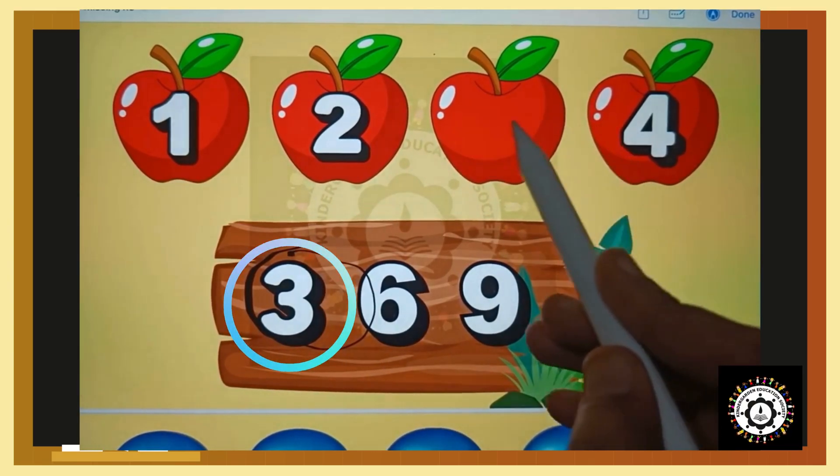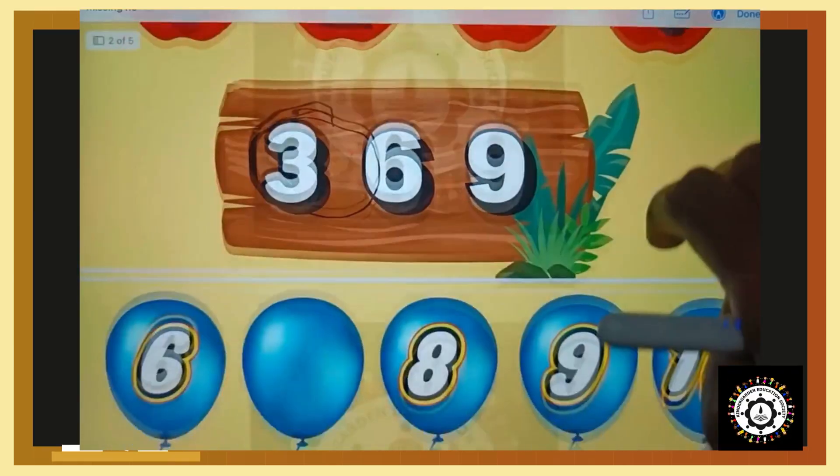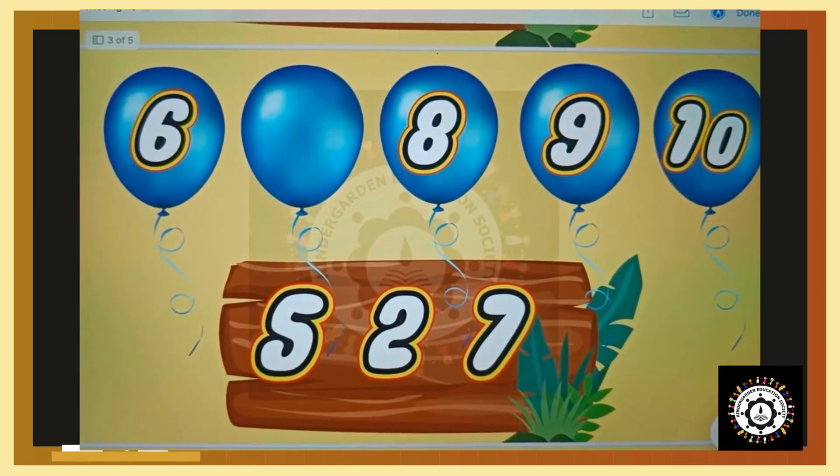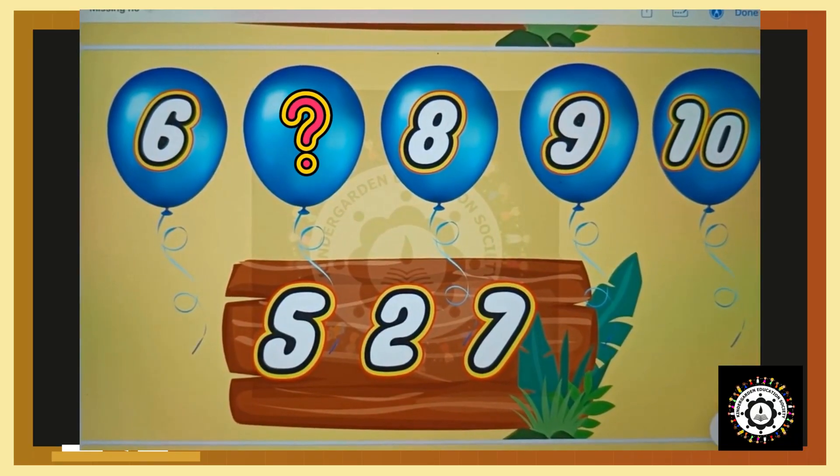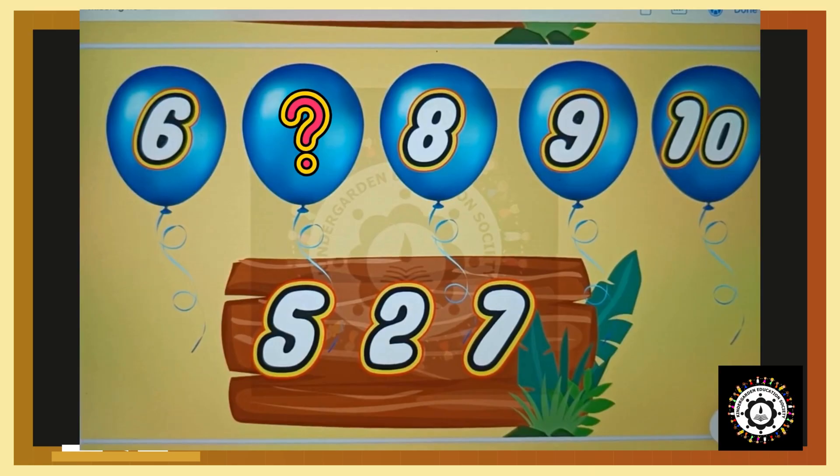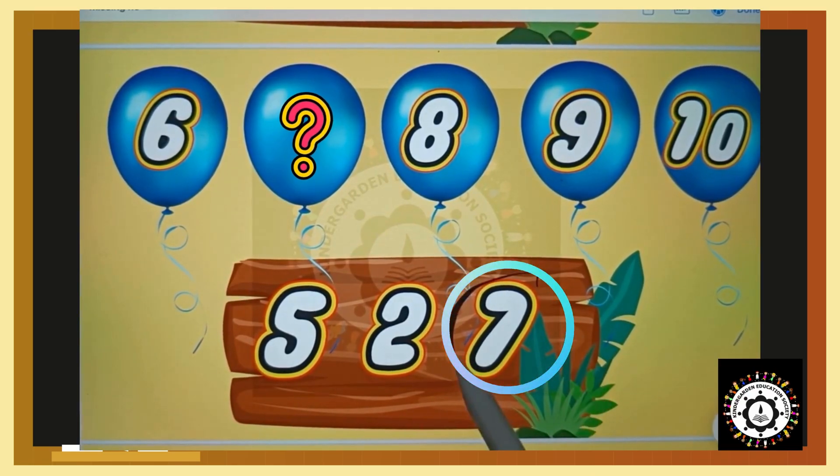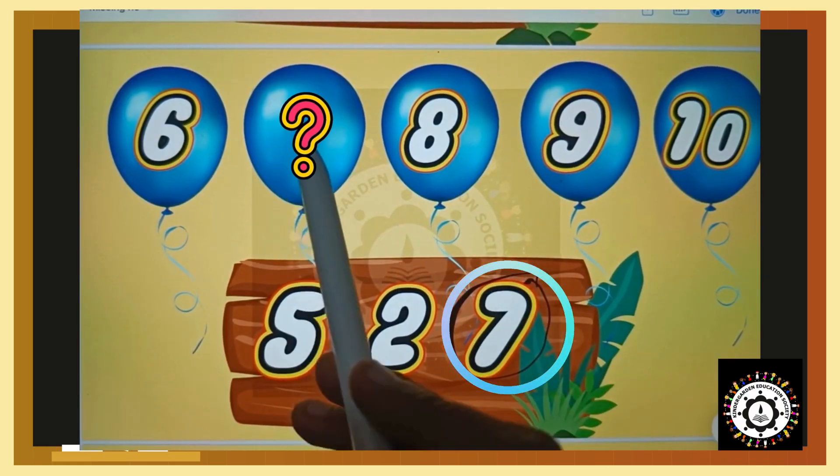Let's write down three here. Next: six, missing number, eight, nine, ten. What comes after six? It's seven. Let's write down seven here.